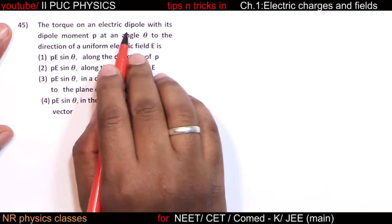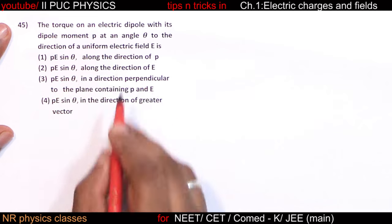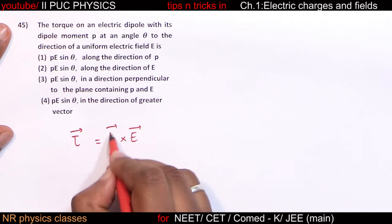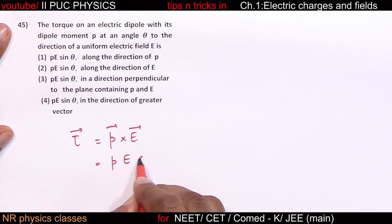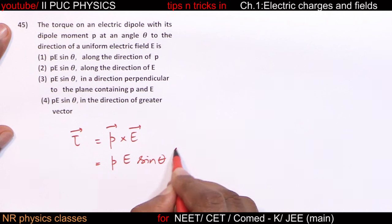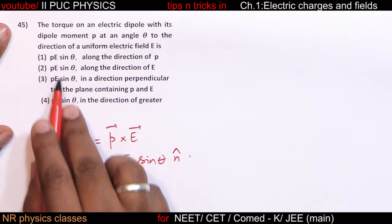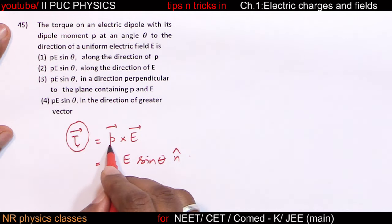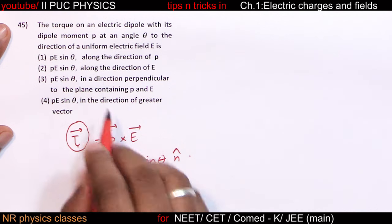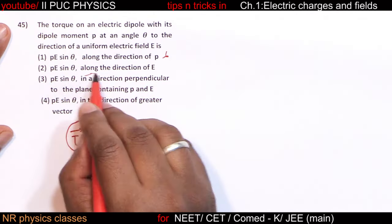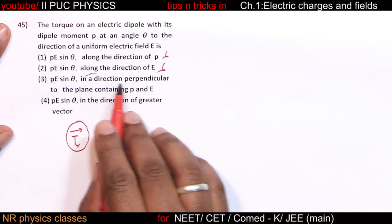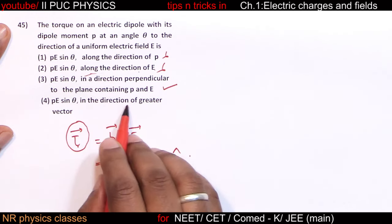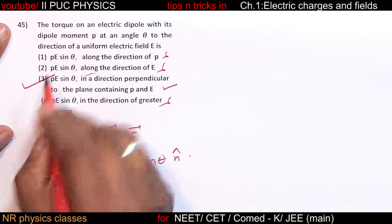The torque on an electric dipole with dipole moment p at angle theta in electric field E: torque = p cross E. Magnitude = pE sin theta. The direction of torque is perpendicular to the plane containing p and E.